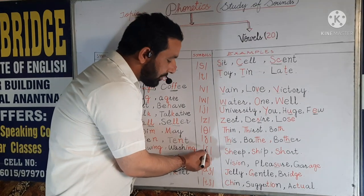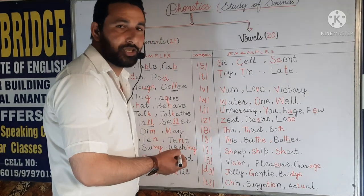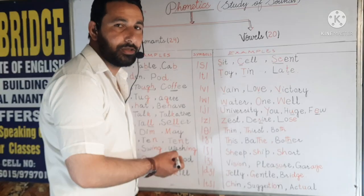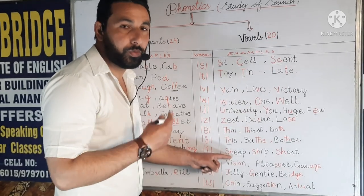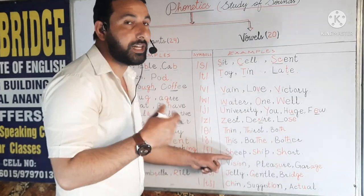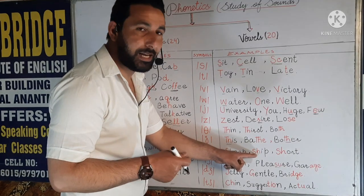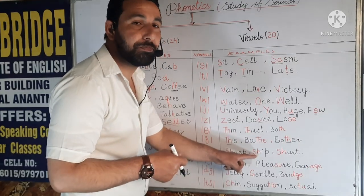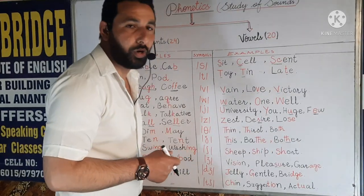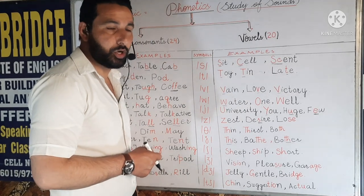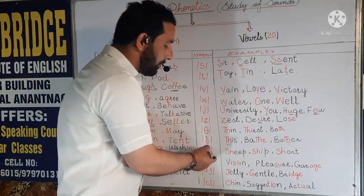Next symbol is SH. For example, we have 'sheep' — we start with sound SH. Next example is 'ship' — SH. Next example is 'shot' — instead of S-H, we produce the sound SH.